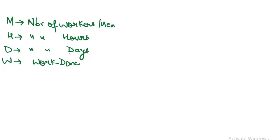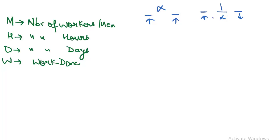Now we need to remember one important thing: quantities can be directly proportional or inversely proportional. If one quantity increases and the other decreases, they are inversely proportional. Now we will discuss the relationship directly. If work done increases, the number of men required is directly proportional. Next, men and hours are inversely proportional.